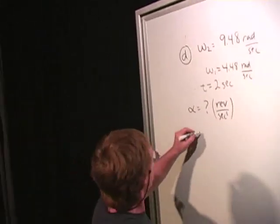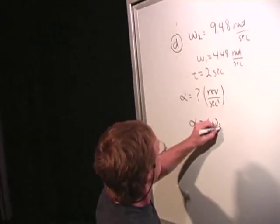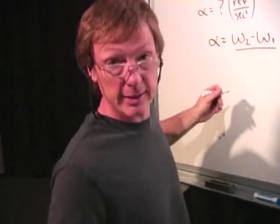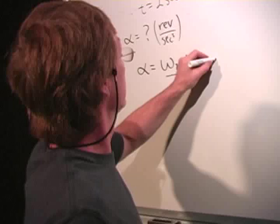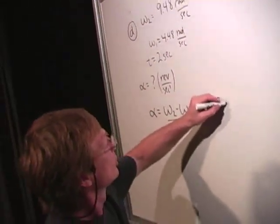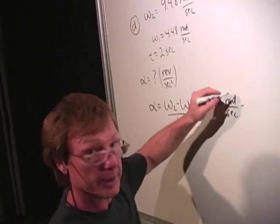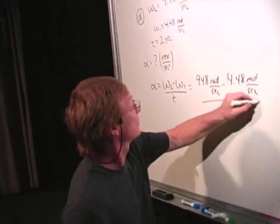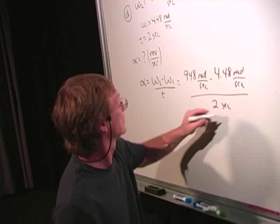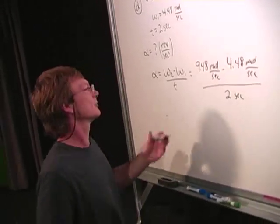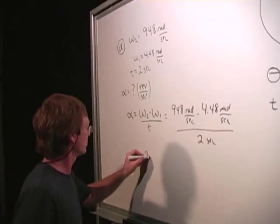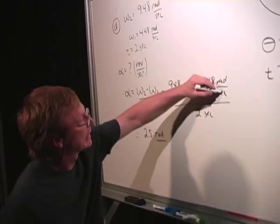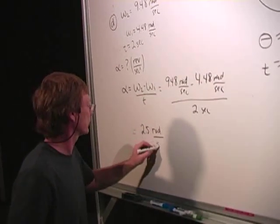First, I'll do it in radians per second. The angular acceleration is omega 2 minus omega 1. The difference in the angles. That's delta omega. But I'll just figure it out calculated in the equation. Divided by the time, and that's going to be 9.48 radians per second minus 4.48 radians per second, divided by 2 seconds. And that's going to give me 5 divided by 2. It's going to be 2.5 radians per second per second. That's going to be radians per second squared.